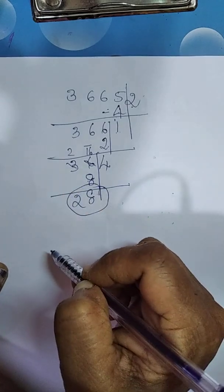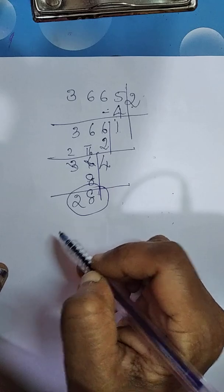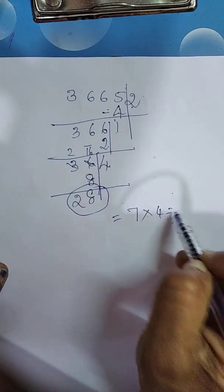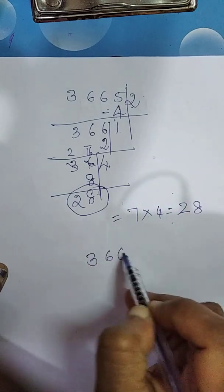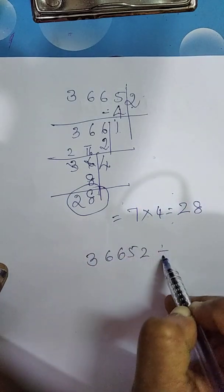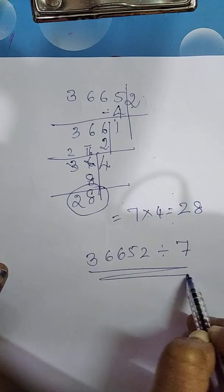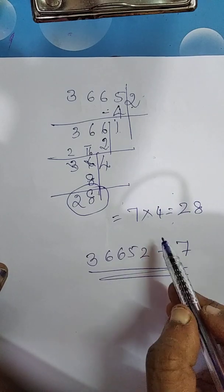28. That is, comfortable number. We know the table. 7 times 4 is 28. Then, the number 36652 is divisible by 7. I think, you understood this method.